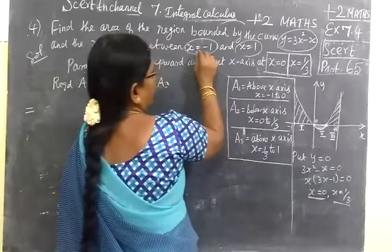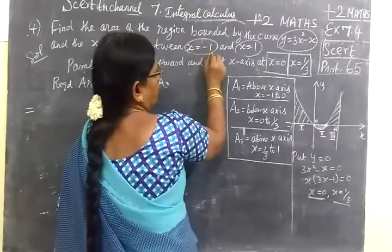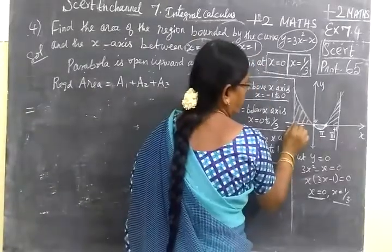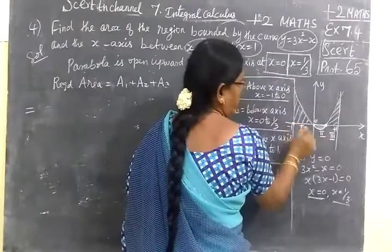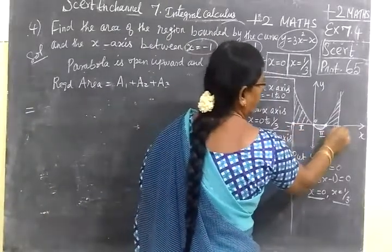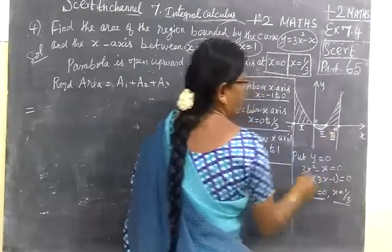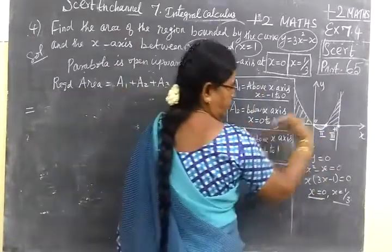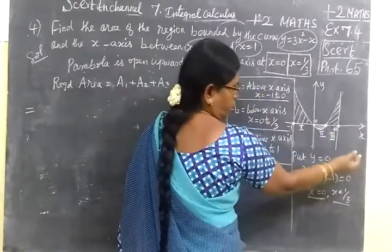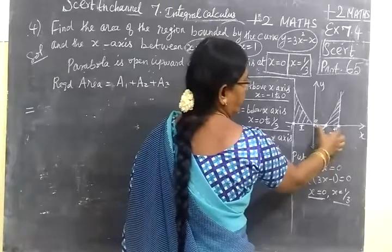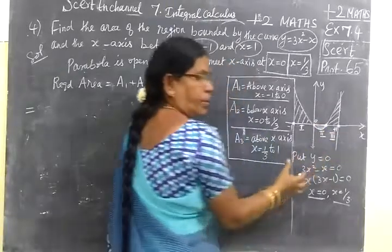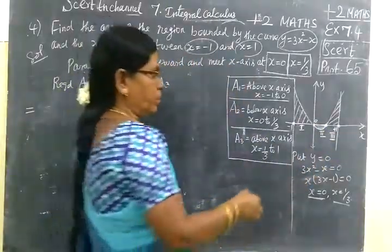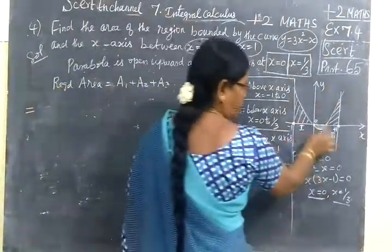The other points are x equal to minus 1 and x equal to 1. So x equals minus 1 is on this side, plus 1 is on this side, and 1 by 3 lies between 0 and 1.